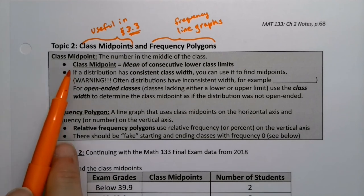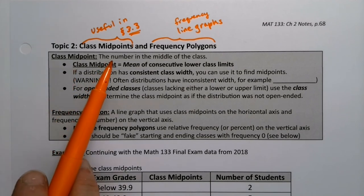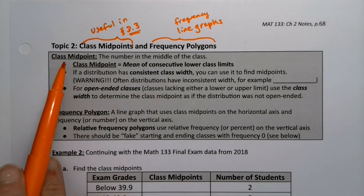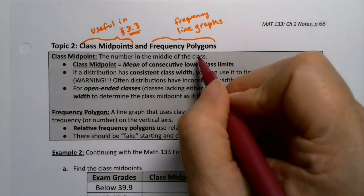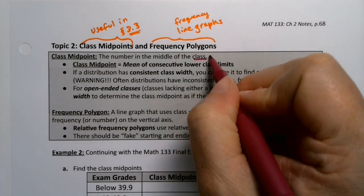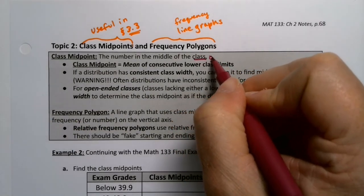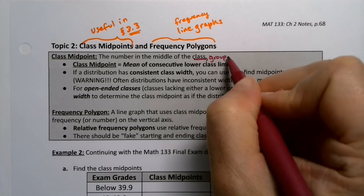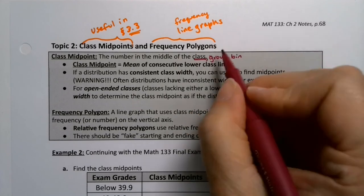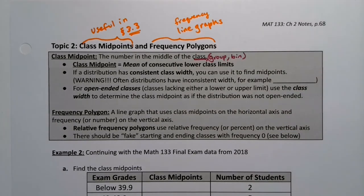So let's look at class midpoint. Class midpoint, funnily enough, because it's the midpoint, is the number in the middle of the class. Now remember, classes are the groups. So class means group or bin, right, from a table.